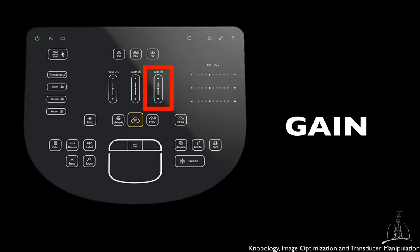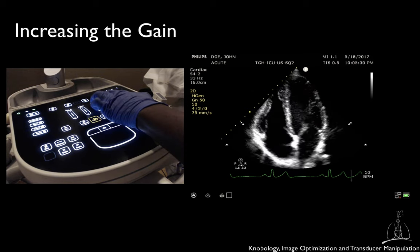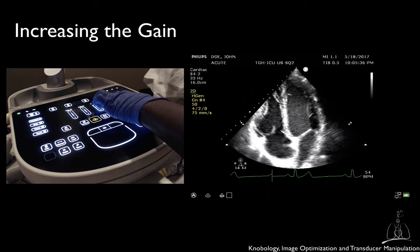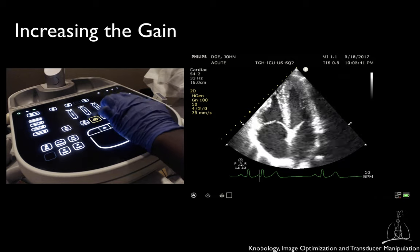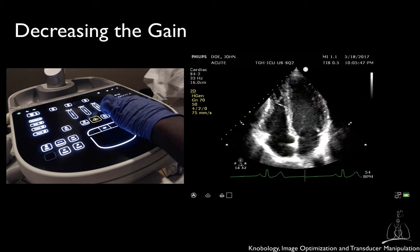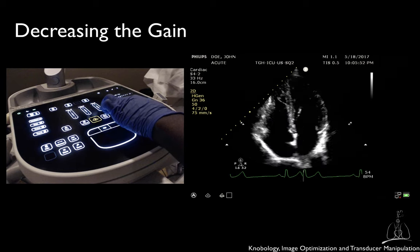The ultrasound signals that return to the transducer are converted into electrical signals. These signals are usually too loud to be displayed on the ultrasound monitor and need to be amplified. This amplification process is also called receiver gain. It can be adjusted by the sonographer to alter the brightness of the image. When you change the gain, each signal undergoes an equal amount of amplification, and therefore the entire image is made brighter or darker. Changing the gain does not improve the signal-to-noise ratio, since both signal and noise are amplified equally.